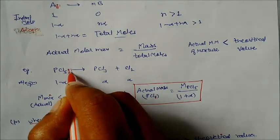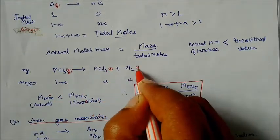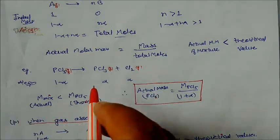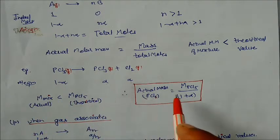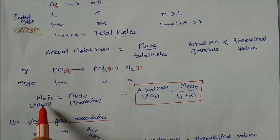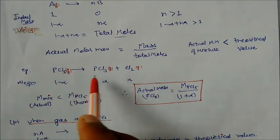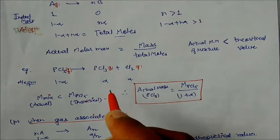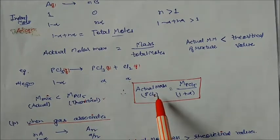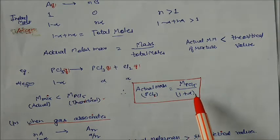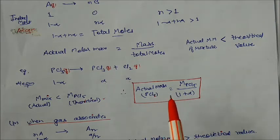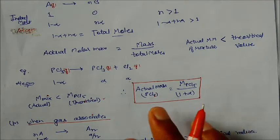Let us take the example of PCl5. Under gaseous conditions, PCl5 dissociates: PCl5 → PCl3 + Cl2. At equilibrium, moles are (1−α) for PCl5, α for PCl3, and α for Cl2, giving total moles = 1+α. The actual molar mass of the mixture will always be less than the theoretical molar mass. The formula is: actual molar mass = theoretical molar mass of PCl5 divided by (1 + α).